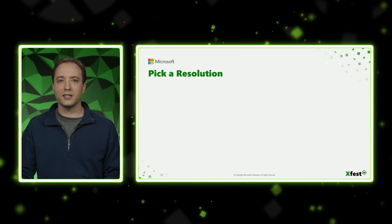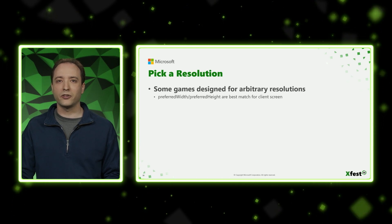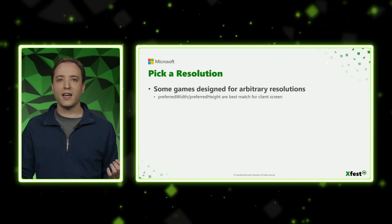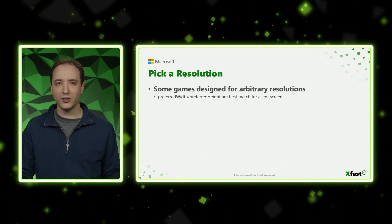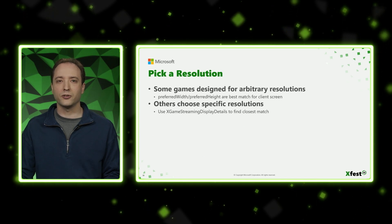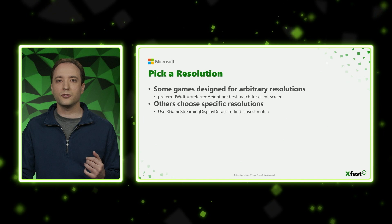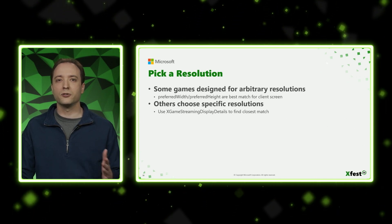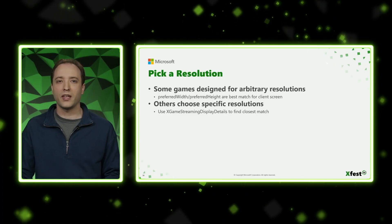So then the next step is to pick a resolution. Some games such as Minecraft are designed for arbitrary resolutions — and if you can do that, that's fantastic. You can just take the preferred width and preferred height, which are the best match for the client screen, and start working with that. However, a lot of other games choose specific resolutions to support — in order to test those specific resolutions, because of performance constraints, or because your UI is a certain size. There are other parameters you can get off of xGameStreamingDisplayDetails in order to find the closest match to what you support, and we'll have an example of that in a minute.